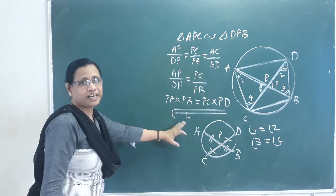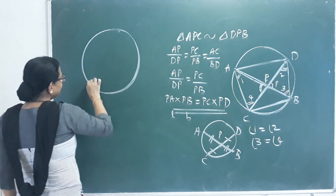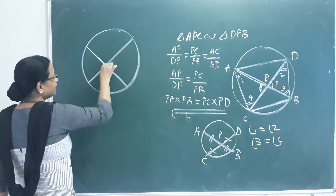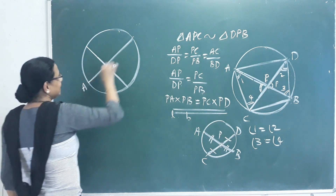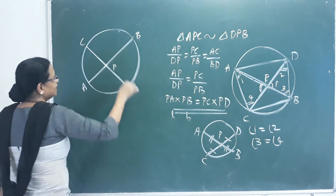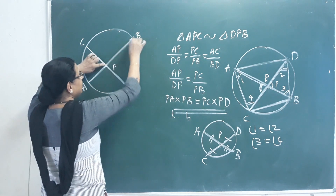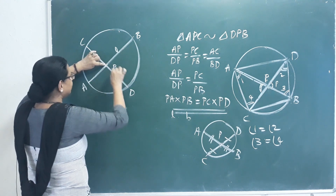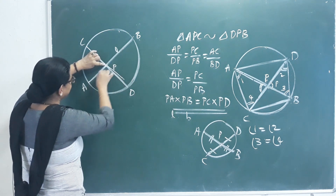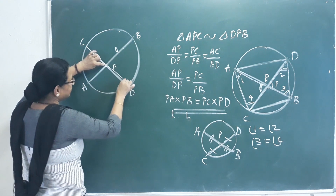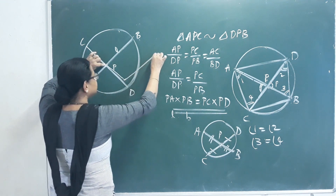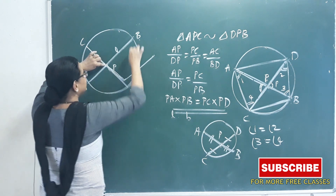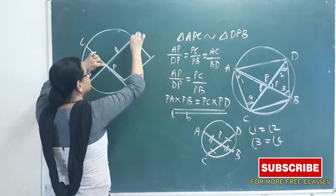How can we represent it pictorially? There are two chords intersecting at point P. These are chords AB and CD. PB is a length segment, PA is a breadth segment. Then I have a breadth here — it is the same distance. There is a perpendicular to 90 degrees. This is the length. This is the distance.